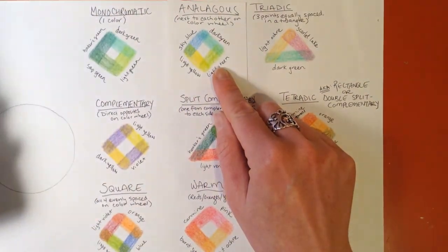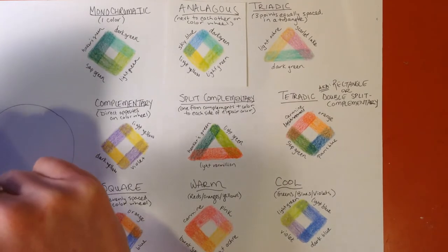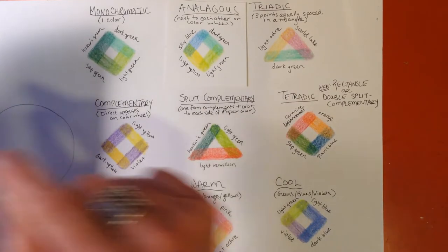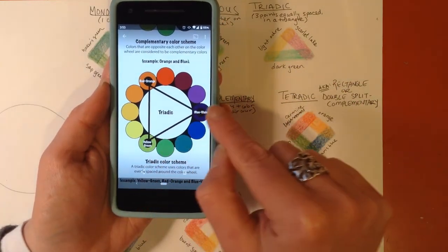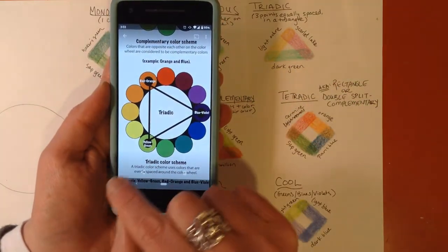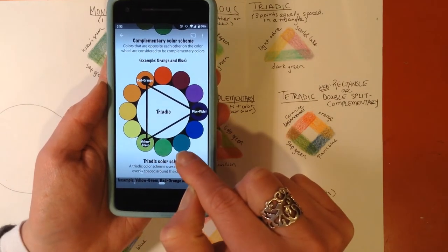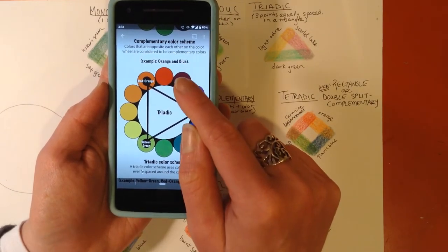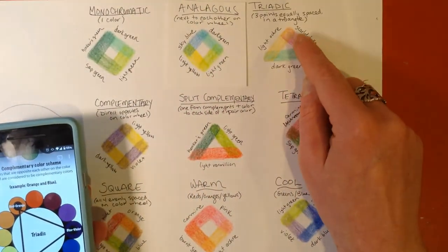Now a triadic color scheme, these are very pleasing to look at to me. Those are evenly spaced around the color wheel, so they create a triangle around the wheel. So you can see my triangle would be yellow, blue green, and red violet. So the colors closest to yellow, blue green, and red violet in my pack to make a pleasing scheme was light ochre, scarlet lake, and dark green.